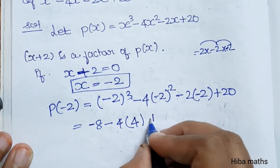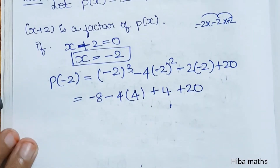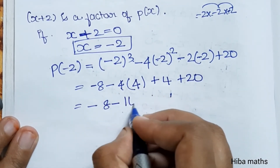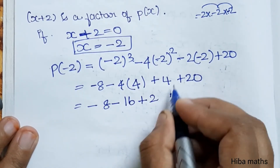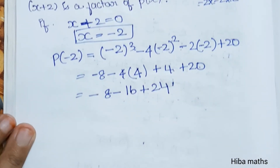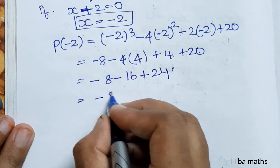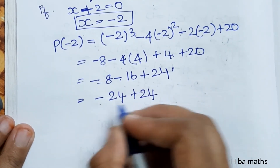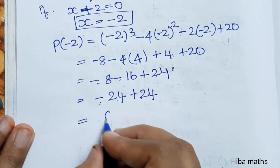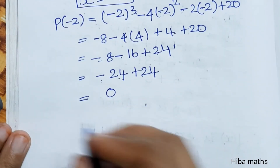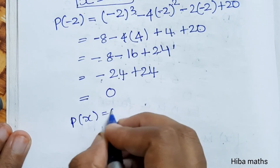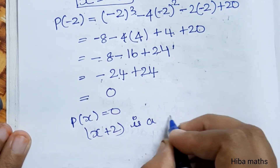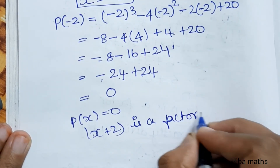So we have minus 8, minus 16, plus 4, plus 20. That gives minus 24 plus 24, which cancel to give p of minus 2 equals 0. Therefore x plus 2 is a factor. It is very easy.